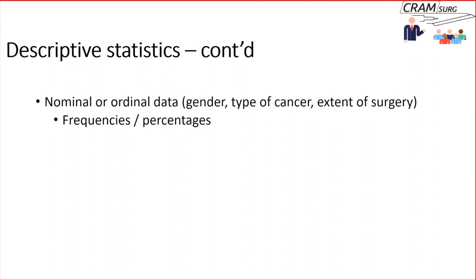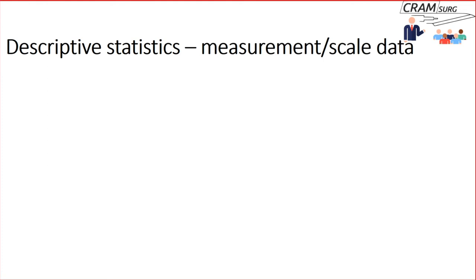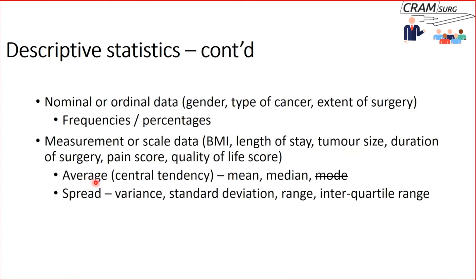If you have nominal or ordinal data such as gender, type of cancer, or extent of surgery, describe them as frequencies or percentages, ideally both. If you have measurement or scale data — BMI, length of stay, tumour size, duration of surgery, pain scores, quality of life scores — you need to describe them using central tendency (the average or middle value) and spread or dispersion (how much your data is scattered around the central value).